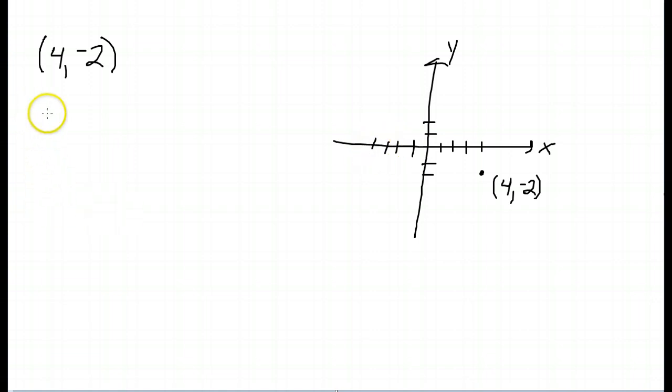Now, if we're going to do, let's say part A, symmetric to the x-axis. To get a point that is symmetric across the x-axis, I need to change the y-coordinate.